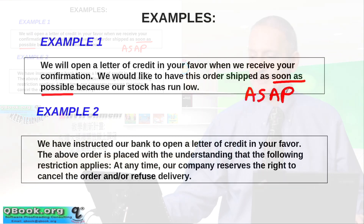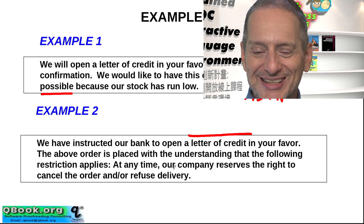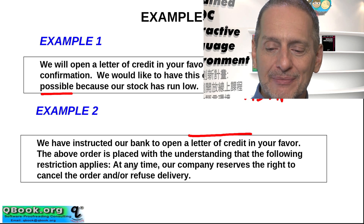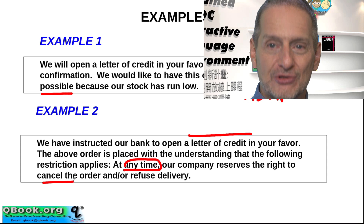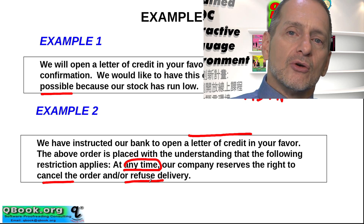Example number two: 'We have instructed our bank to open a letter of credit in your favor. The above order is placed with the understanding that the following restriction applies: at any time our company reserves the right to cancel the order and/or refuse delivery.' That is a very serious restriction — at any time they can cancel and also just refuse delivery. That's pretty extreme.